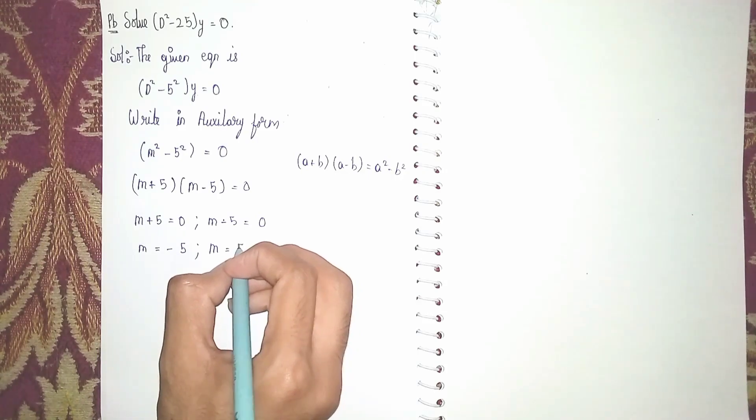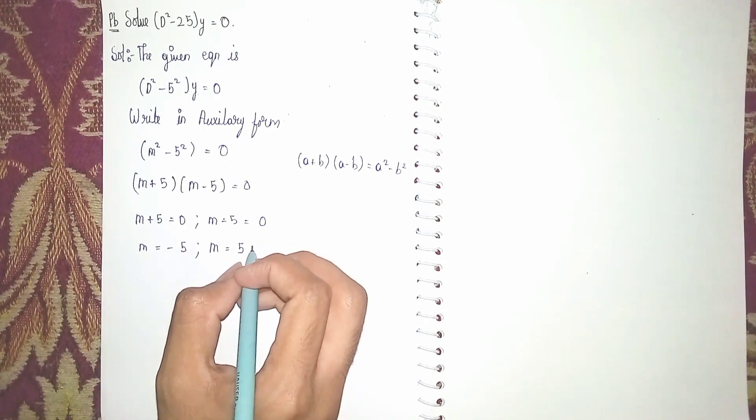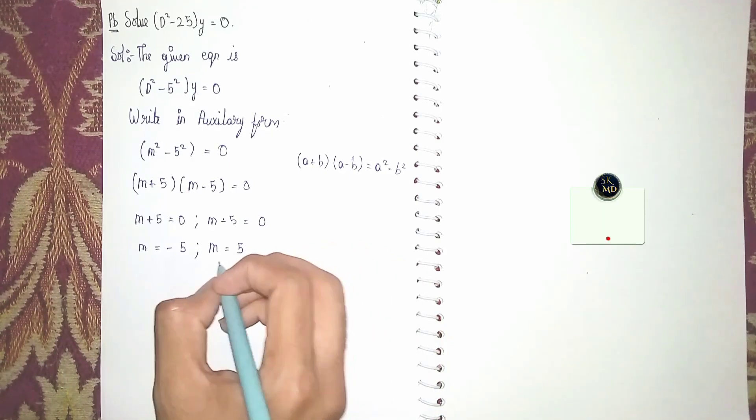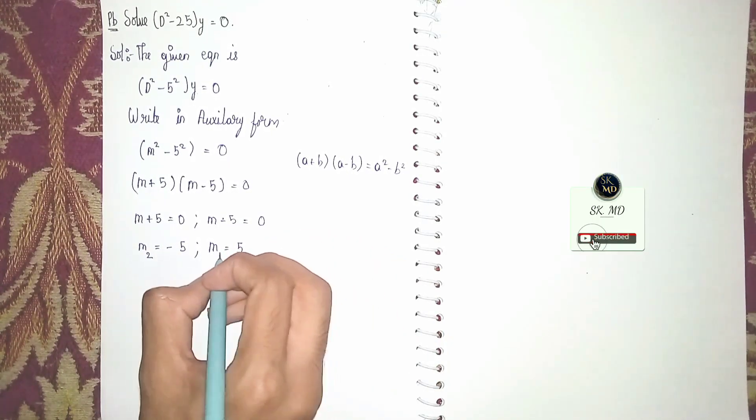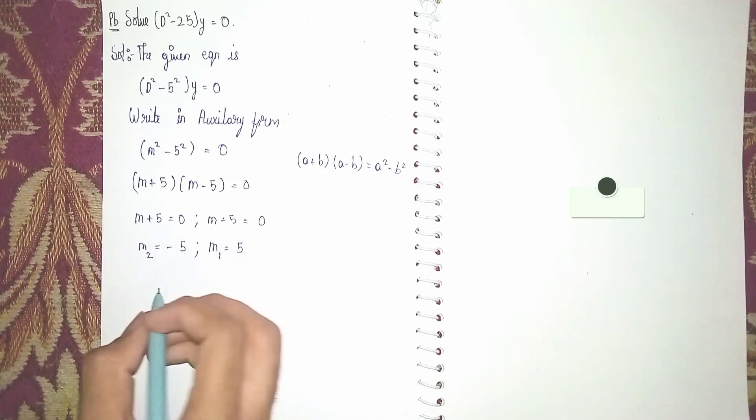Now we have to find m1 and m2. Take first m1 as positive, then m2 as negative. This is m1 and this is m2. The two roots are real and distinct.